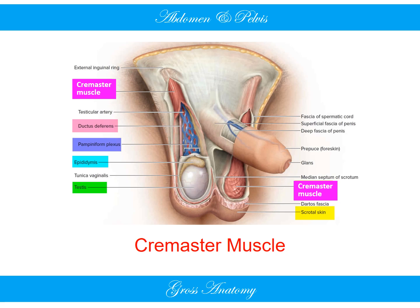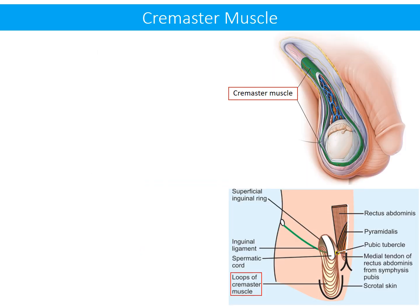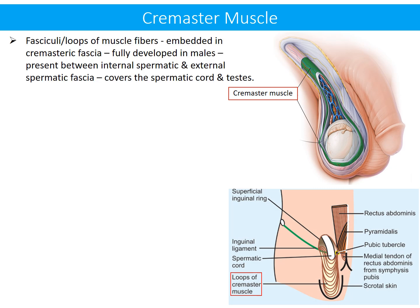Cremaster muscle and its clinical relevance. Cremaster muscle is a muscle of the genital region and is present as fasciculi or loops of muscle fibers embedded in cremasteric fascia. This muscle is fully developed in males and is present between the internal spermatic fascia and external spermatic fascia, and it covers the spermatic cord and testes.